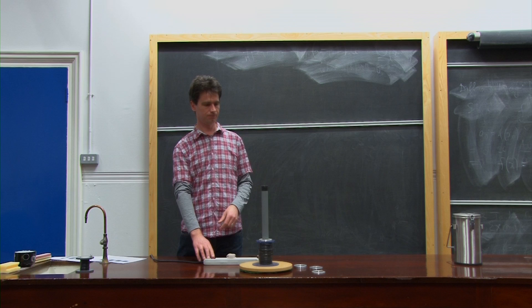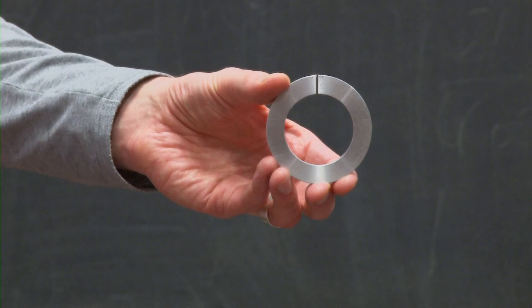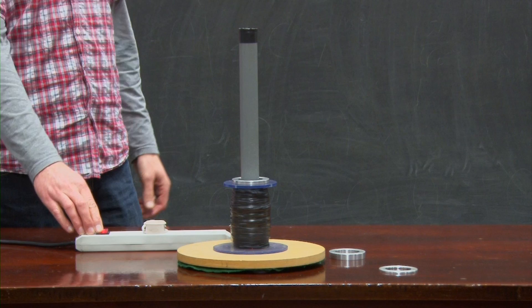We can easily show that the force launching the ring into the air comes from an induced current flowing in the aluminium ring. This time, there is a gap in the ring. It isn't a complete circuit and so no current flows.